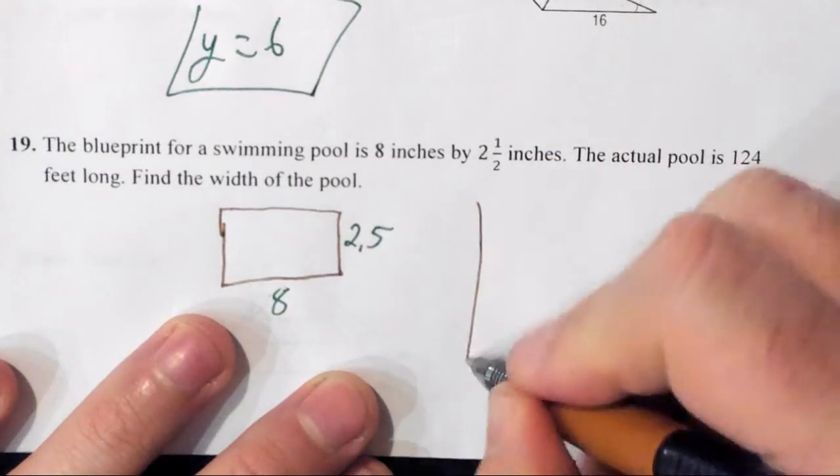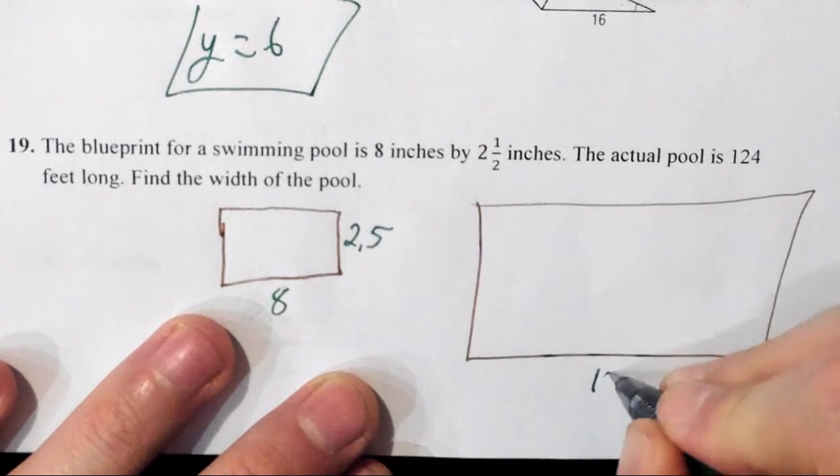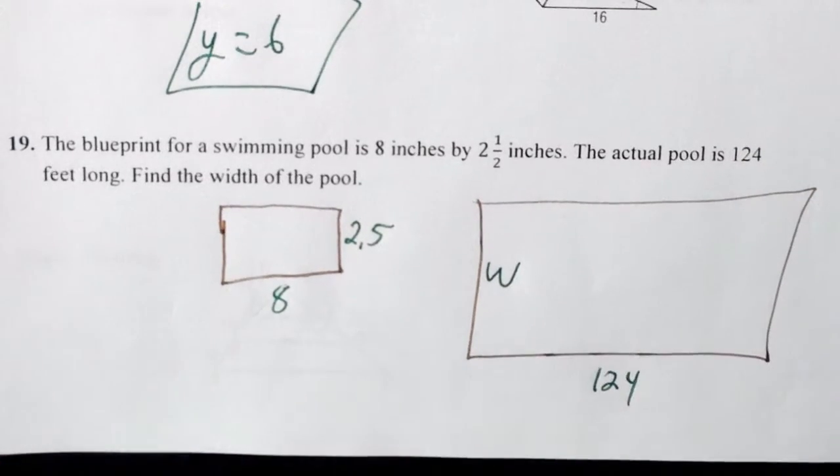Now our actual pool, which is going to be much bigger, is 124 feet long. So we want to find the width of the pool, we want to find our W here.